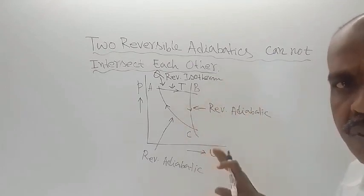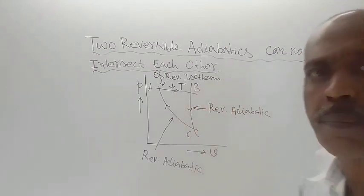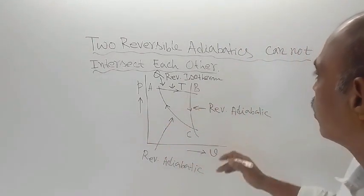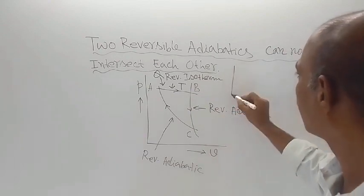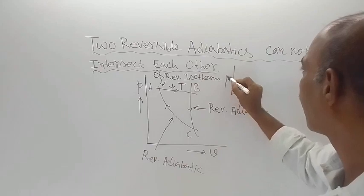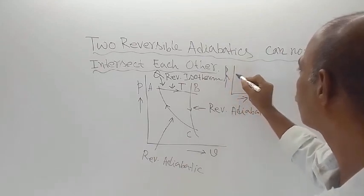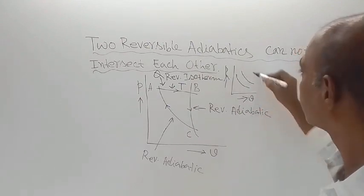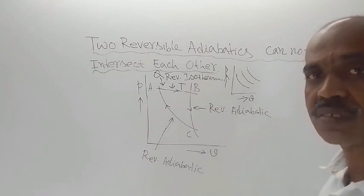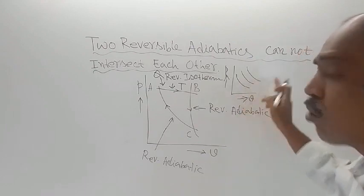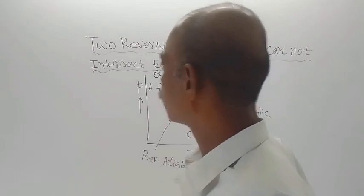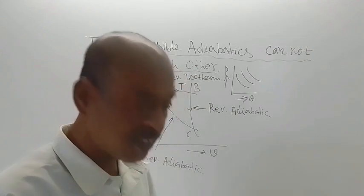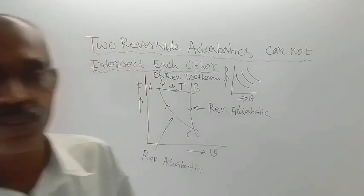This is actually impossible. That means all the reversible adiabatics should be parallel to each other — they cannot intersect. On a PV diagram with axes V and P, if this is one reversible adiabatic, then another reversible adiabatic should be parallel to it. They cannot intersect each other. This is the end of this lecture. Thank you for watching this video.